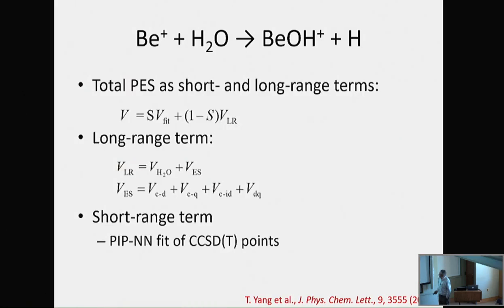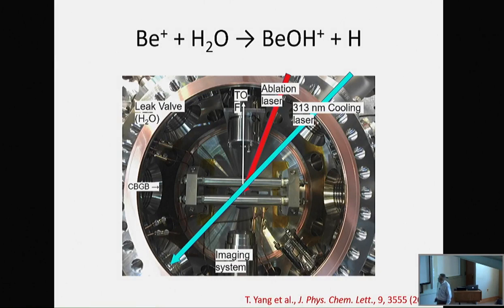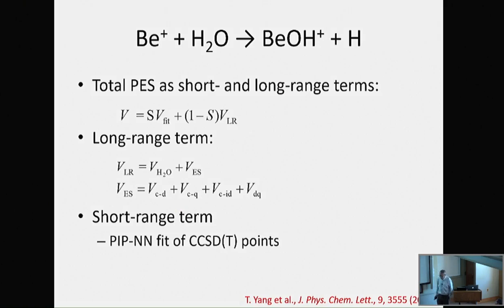This is actually an advertisement for Wes's talk tomorrow. It's really interesting to look at this from two sides: the theory side, where you build potentials and do the dynamics, and the experimental side with all the lasers, vacuums and so on. So what we do is: they have done the experiment, and we do the same trick as before. We have a short-range potential and a long-range potential. For the long-range potential, we have charge-dipole, charge-quadrupole, charge-induced dipole, and dipole-quadrupole terms, which are extremely important to describe long-range interactions. For the short-range, we use the same neural network approach. And just to show you how good these are — these are the ab initio calculations all the way to about 20 Angstroms, and we can fit them very well.